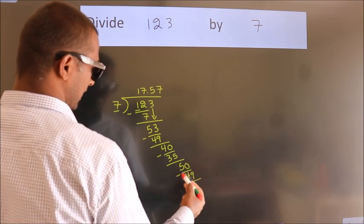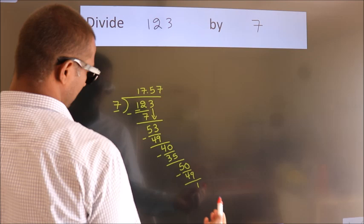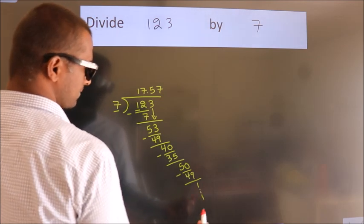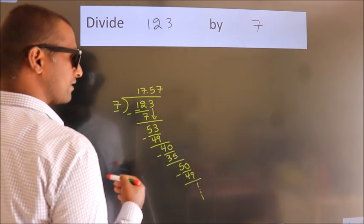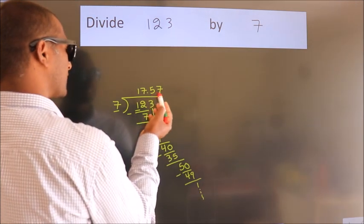Now we subtract. We get 1. And the division continues. It is enough if we do up to two decimal places.